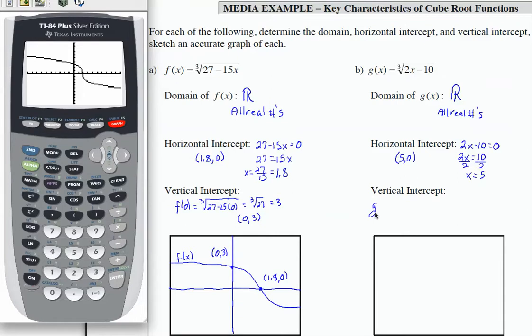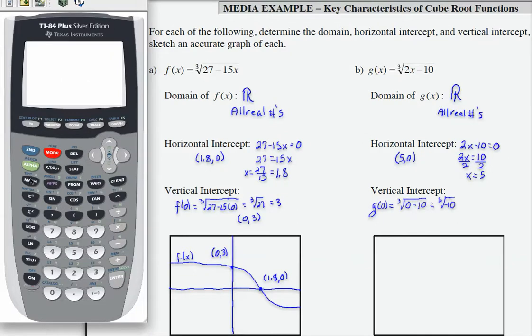To find the vertical intercept, I need to evaluate g(0). That's the cube root of 2 times 0 minus 10. That's the cube root of negative 10. Let's go ahead and do that on the calculator. So second quit will take me back to the home screen. Math number 4 will give me a cube root. Negative 10 goes under the radical, use the arrow key to end the radical, and then hit enter. So I'm going to get negative 2.15. Let's round that to negative 2.2. So that's going to give me an ordered pair (0, -2.2).